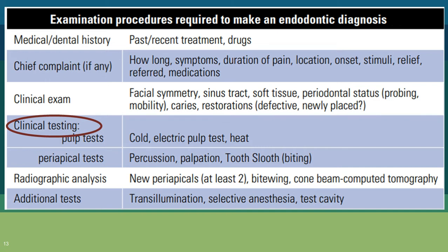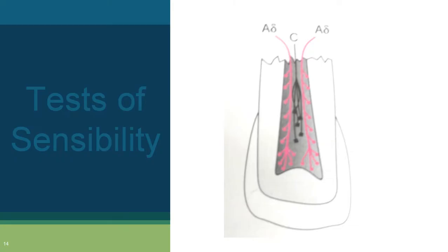After history and examination, we perform clinical tests to diagnose pulpal and periapical diseases. These are classified as pulp tests and periapical tests. Pulp tests indicate the status of the pulp; periapical tests indicate the status of the periodontal ligament. The cold test, heat test (together called thermal tests), and electric pulp test are termed tests of sensibility because they rely on neural response — specifically the A-delta fibers peripherally and C-fibers centrally placed in the pulp.